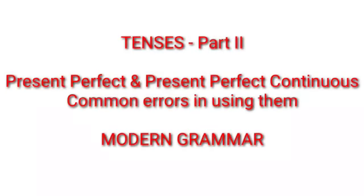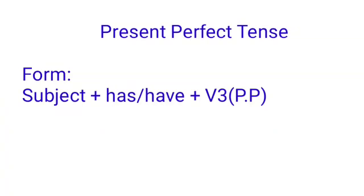Hi viewers, this is Marshall from Modern Grammar. Today in the tense series we are going to see the use of present perfect and present perfect continuous, and we are going to see the common errors in using them. Let's start with present perfect. We form present perfect tense with subject plus has or have plus V3, that means the verb in third form, which we call the past participle form.